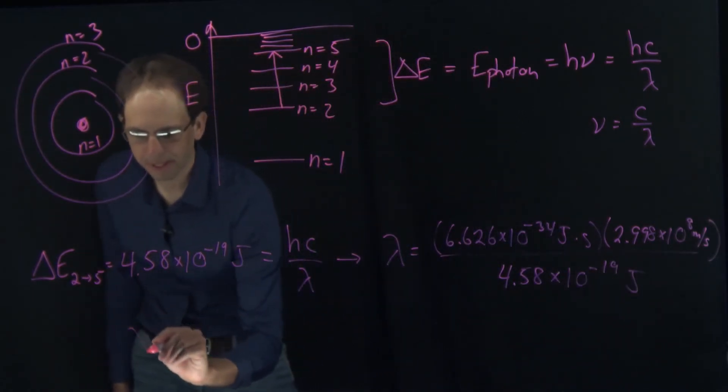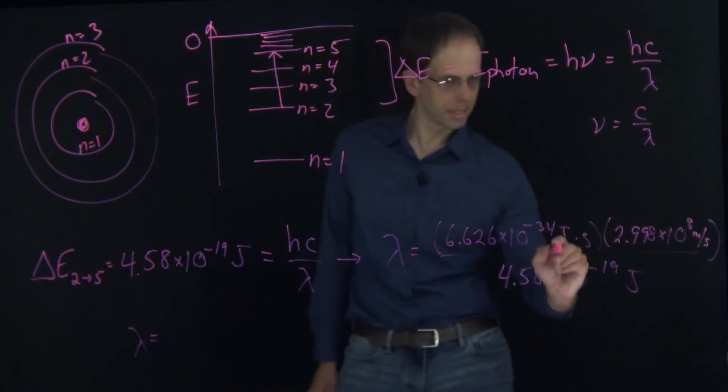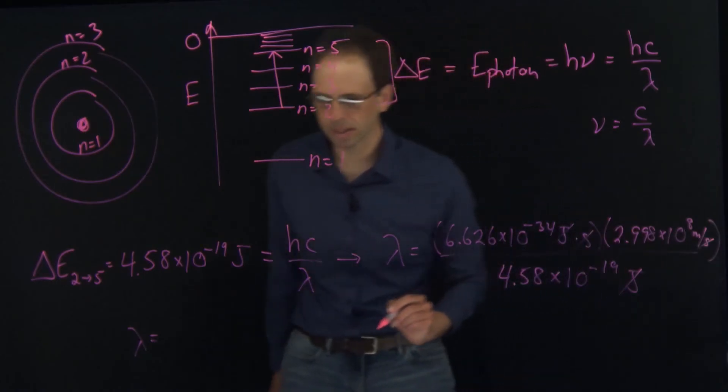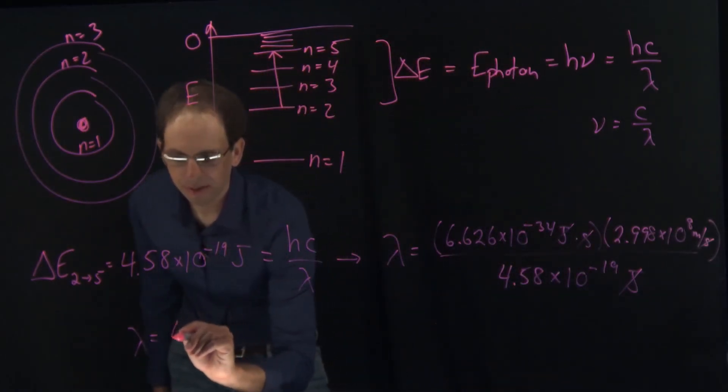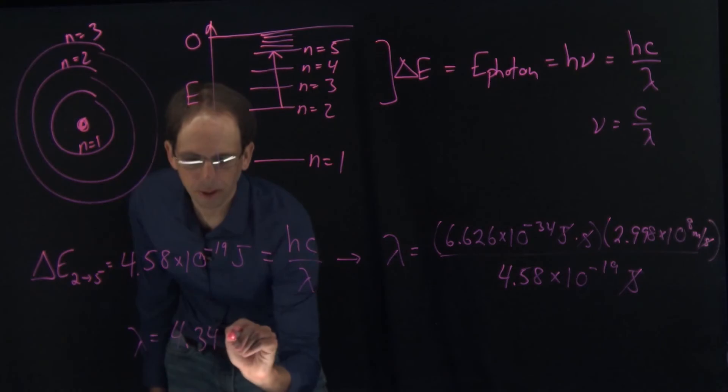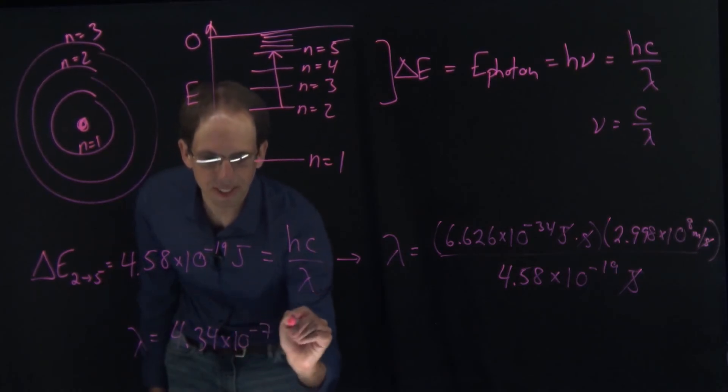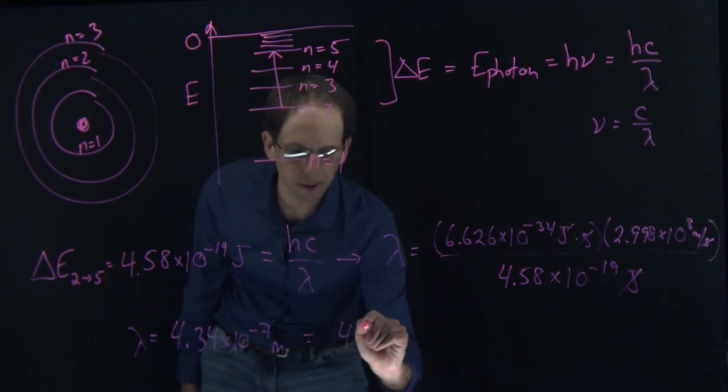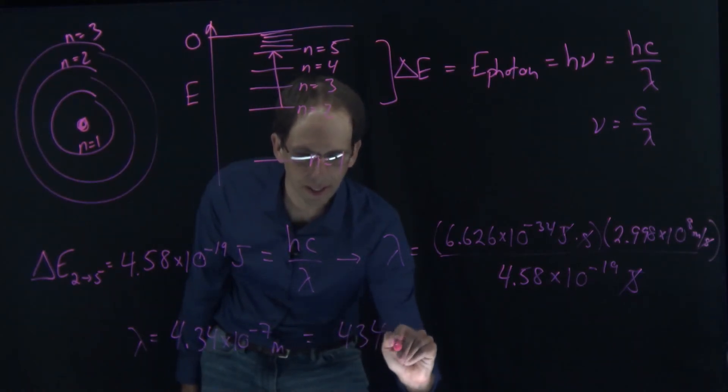And what I get from this is, let me double check my units, my joules are going to cancel, my seconds cancel, and I'm going to be left with units of meters. I get a wavelength of 4.34 times 10 to the minus 7 meters, or I could convert that and this equals 434 nanometers.